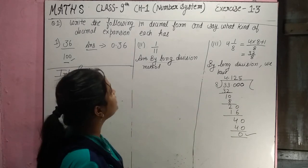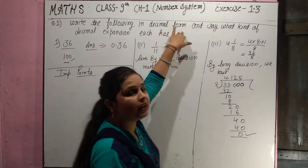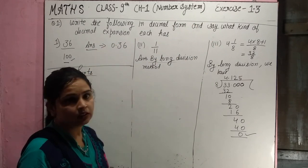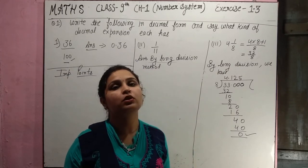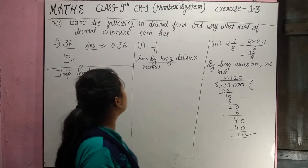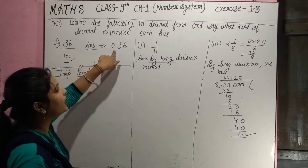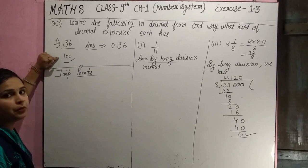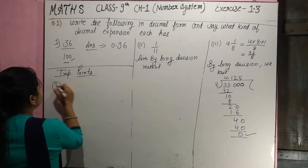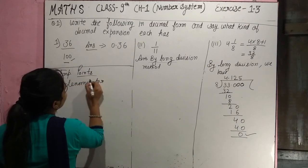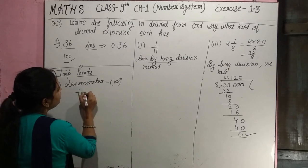The first question is: write the following in decimal form and see what kind of decimal expansion each has. We have to write each in decimal form and tell which kind of decimal expansion it is. The first sub-question is 36 by 100. Since we have 100 in the denominator, we can easily calculate this: 0.36. If we had 1000 in the denominator, it would be 0.036. When we have 10 (or a power of 10) in the denominator, it will give us a terminating decimal expansion.